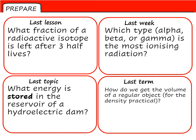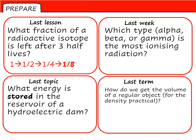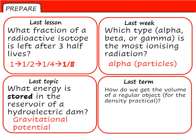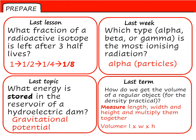Looking at those answers: number one, after three half-lives you go from one, to a half, to a quarter, to one eighth — so one eighth of the original isotope would remain. The most ionizing is alpha particles. In a reservoir, the water is high up and will have gravitational potential energy. Finally, we measure the length, width, and height of the object and multiply them together using the equation: volume equals length times width times height.